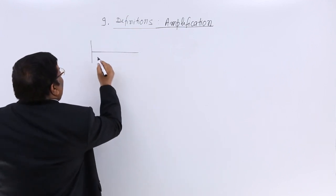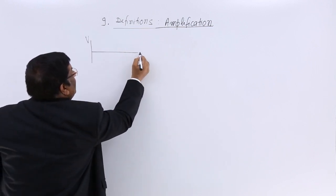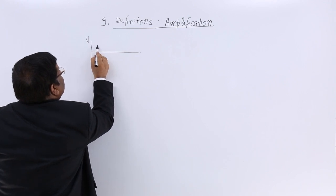We are sending a signal and signal is represented by voltage variations. The voltage variations for a particular time, let us say it is like this.